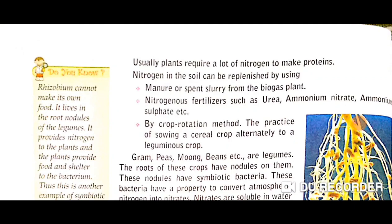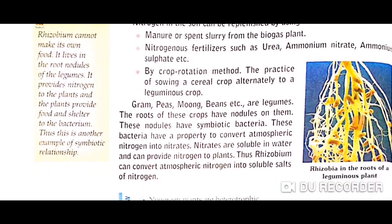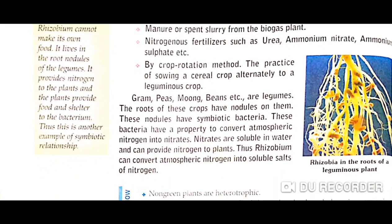The next method is crop rotation. Crop rotation means growing dissimilar or different types of crops in the same field in a sequenced manner. The practice of alternating cereal crops with other crops helps to regain soil nutrients and helps to increase crop yield in the field.